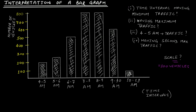For the maximum traffic, we look at the bar with the maximum height. In this case, two bars have the same height and both come against the number 800. So 800 is the maximum traffic, occurring during two time intervals: 7 to 8 am and 8 to 9 am.